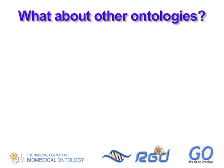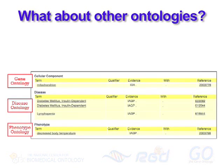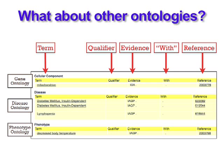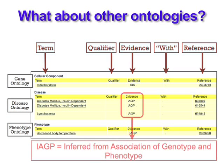Now that we've seen how annotations for the Gene Ontology are organized, what about other ontologies? Annotations for other ontologies can be structured in much the same way, or they can be quite different. For instance, the Rat Genome Database uses ontologies to express information about disease and phenotype associations. The structure of these annotations is similar to that of GO annotations, but they do use some alternative evidence codes.